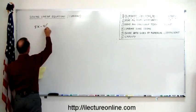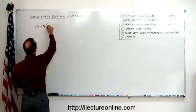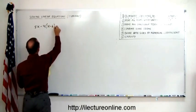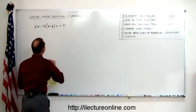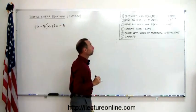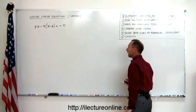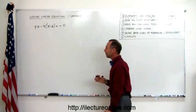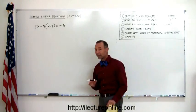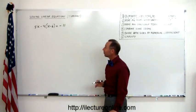5x minus 4 times x minus 6 is equal to minus 11. So, we have parentheses. And whenever you have parentheses, you probably want to get rid of those first. If you have a combination of parentheses, fractions, decimals, I would say go after those parentheses first.